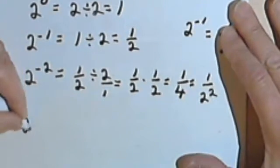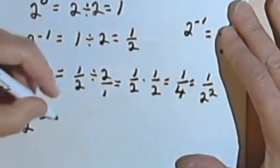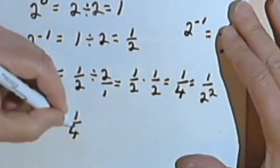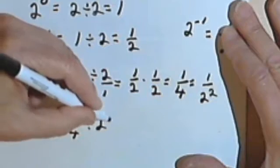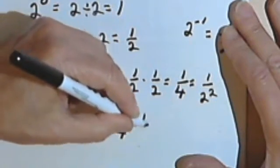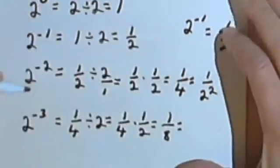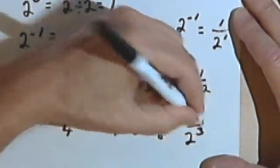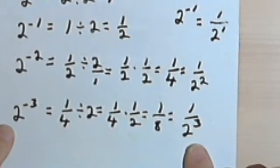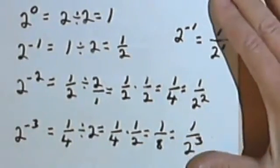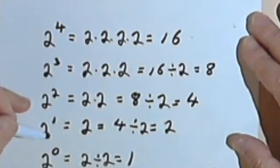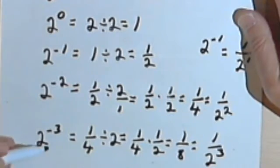And this would continue. 2 to the negative 3rd would be the same as 1 fourth divided by 2, which is the same as 1 fourth times 1 half. That's 1 over 8, but 8 is 2 to the 3rd. So actually, these negative exponents just come about logically by taking a pattern that we can make with exponents and continuing that pattern to their logical conclusion.